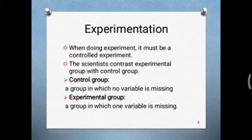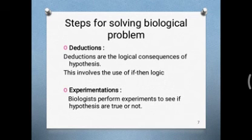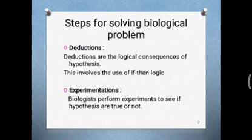Next is experimentation. In experimentation, biologists perform experiments. The most basic step of biological method is experimentation — underline this line for MCQs. Biologists perform experiments to see if hypotheses are true or not — to find out whether a hypothesis is correct or incorrect.